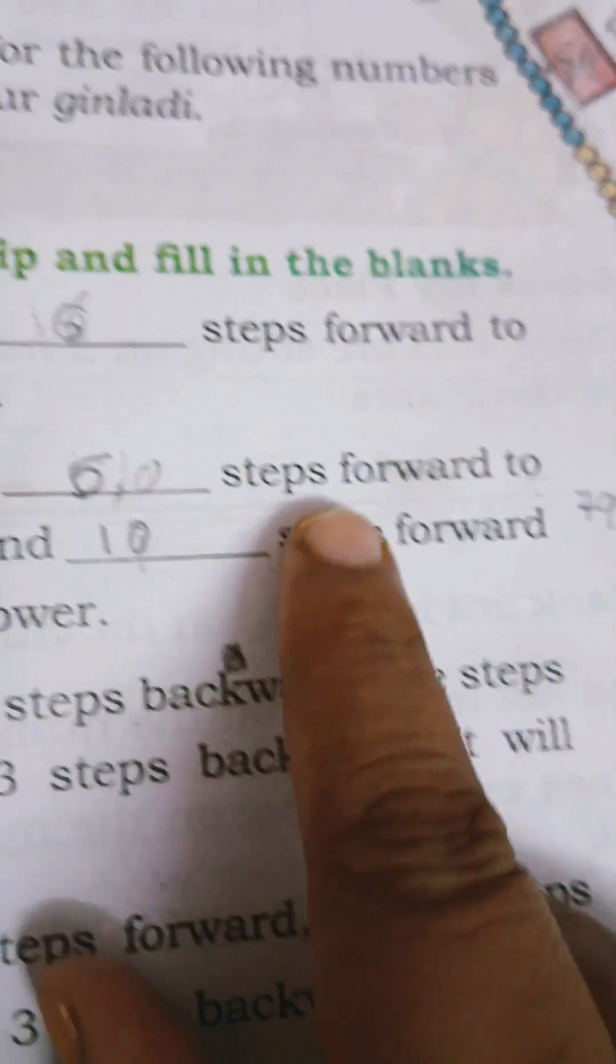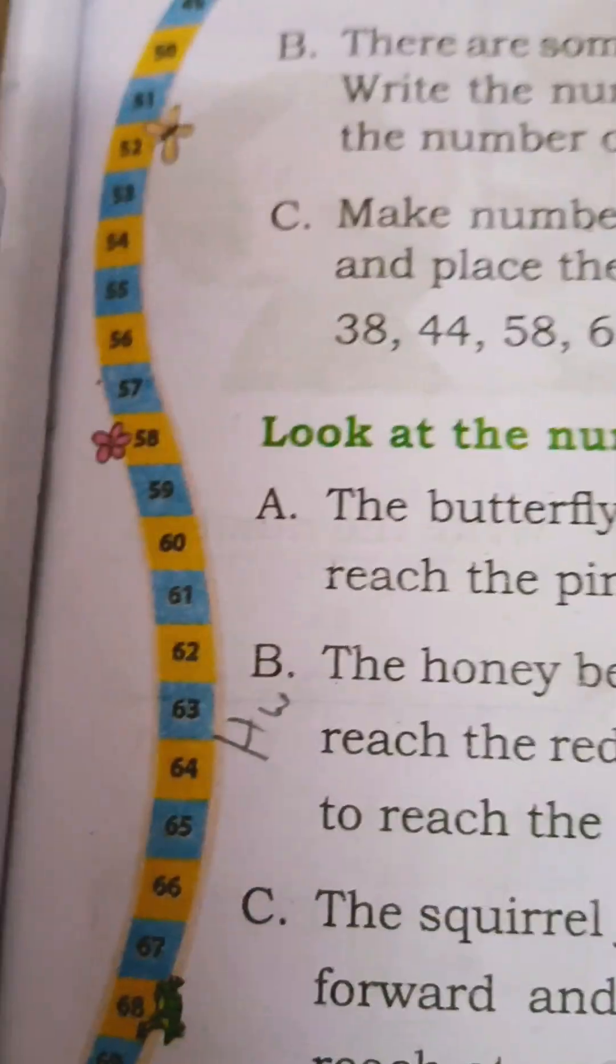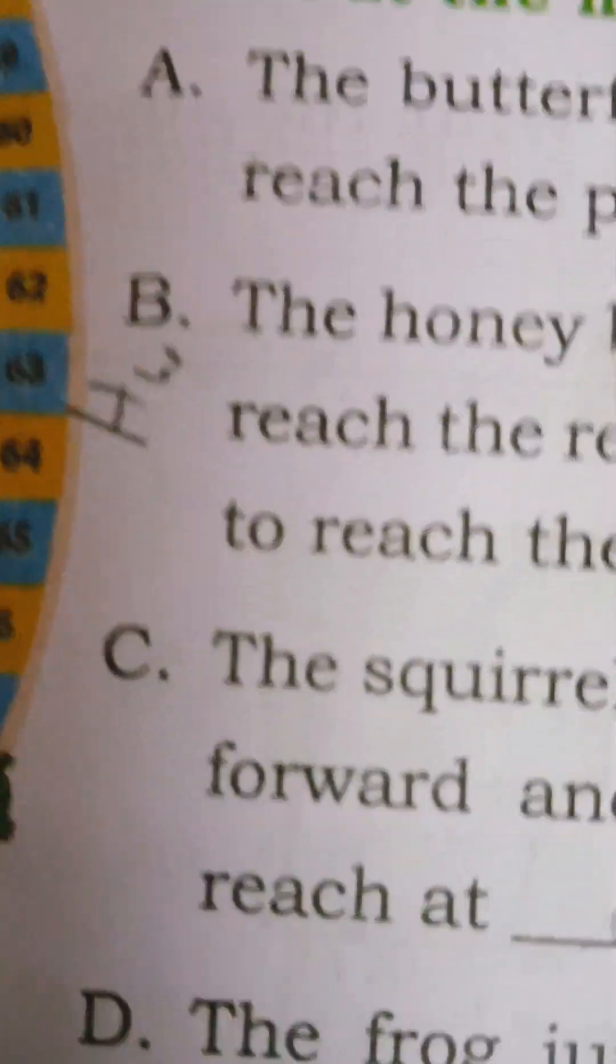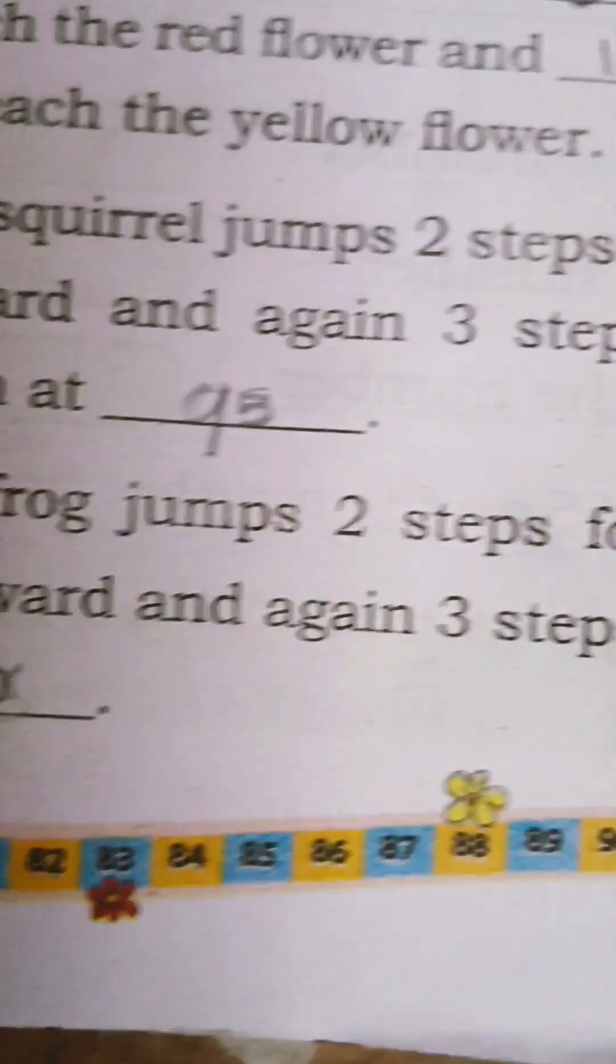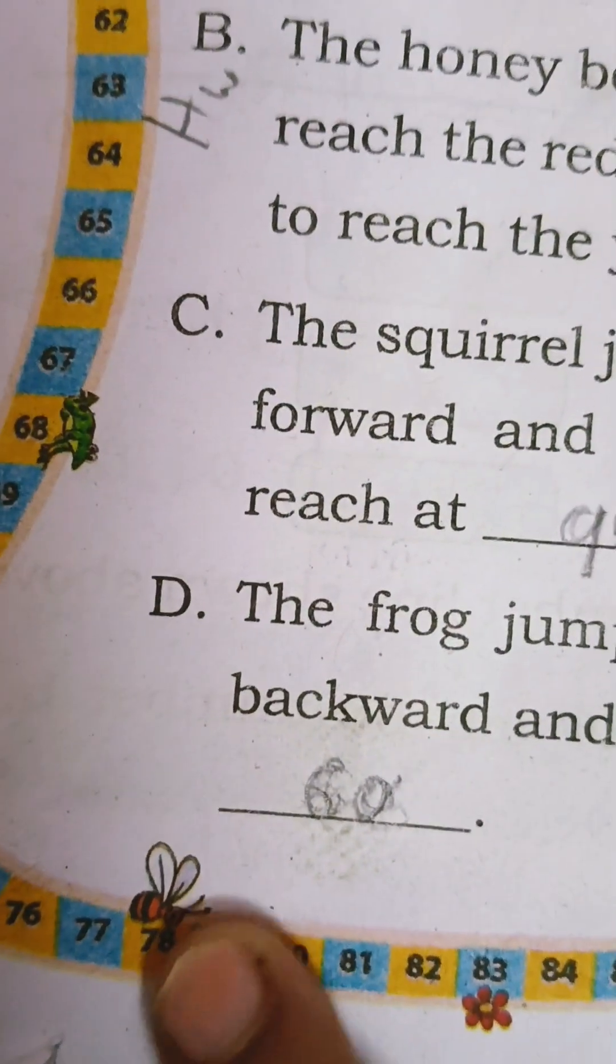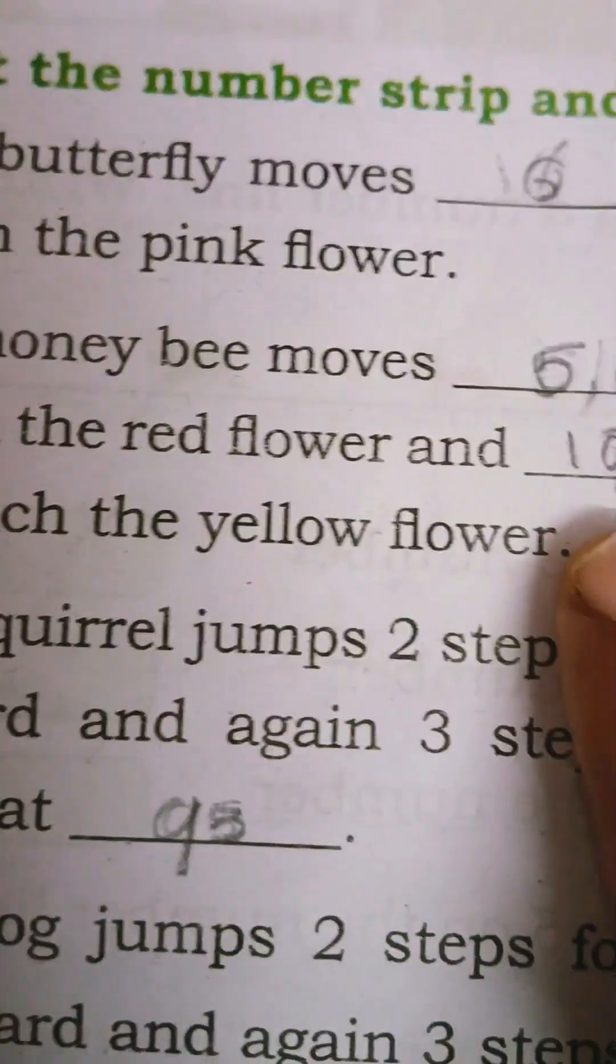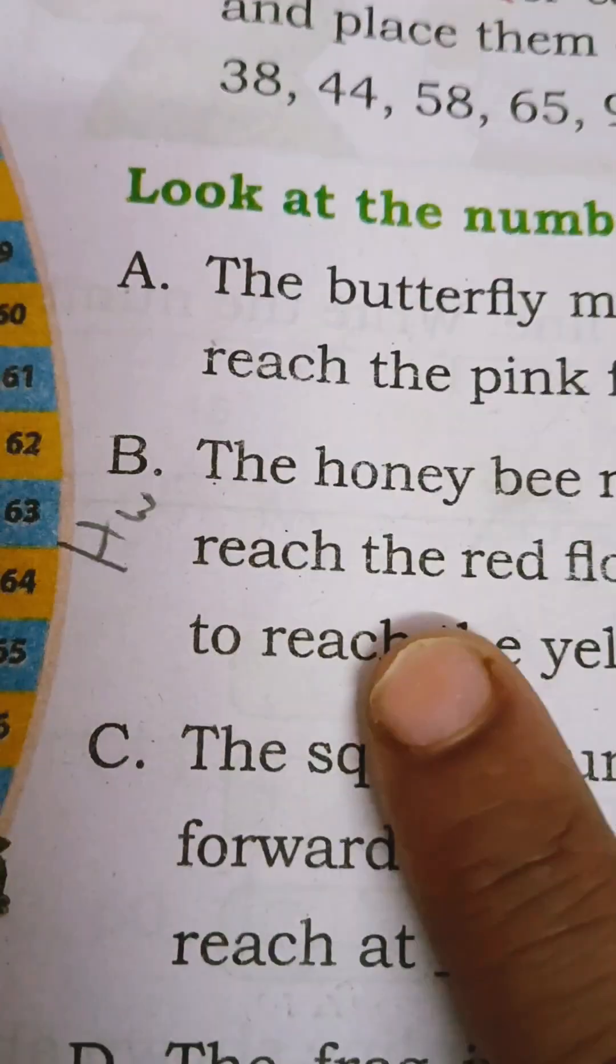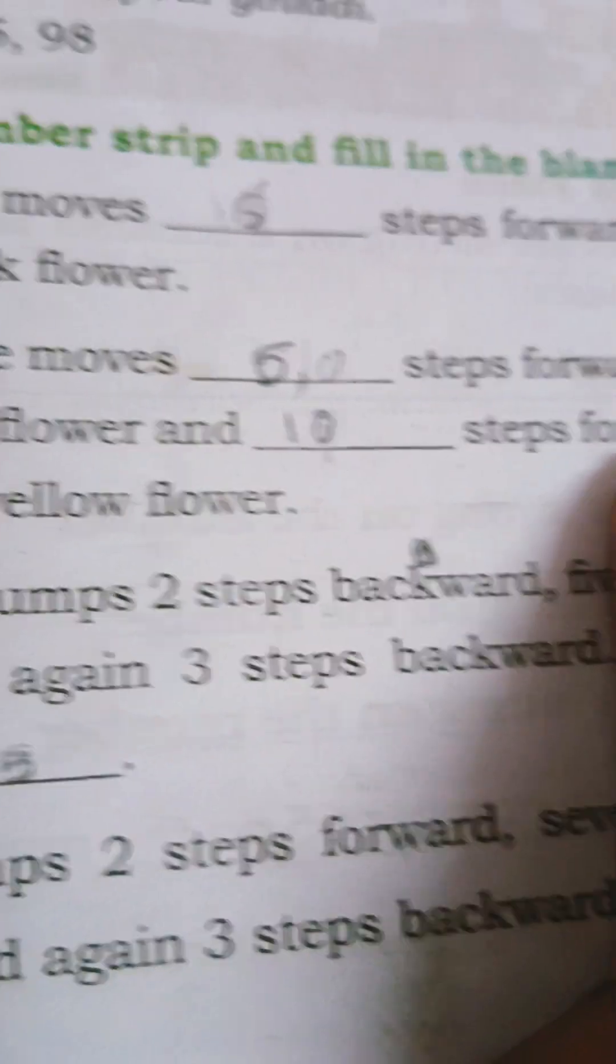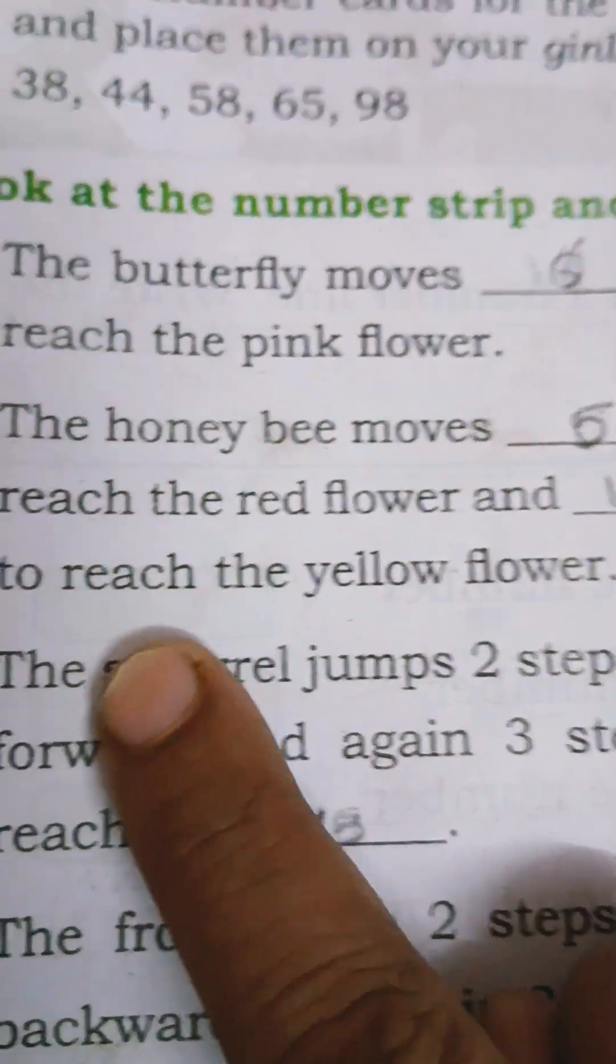Like that, the honey bee moves dash steps forward to reach the red flower. Next, honey bee. Where is honey bee? Honey bee is here: 1, 2, 3, 4, 5. 5 steps to reach the red flower and 10 steps forward to reach the yellow flower.